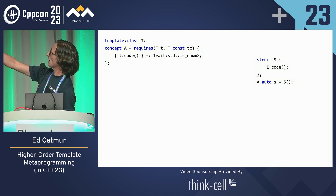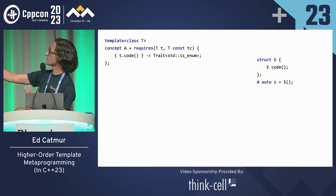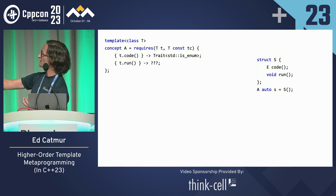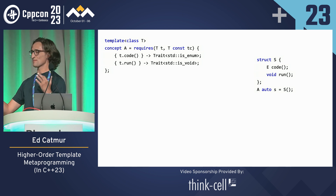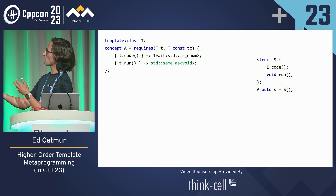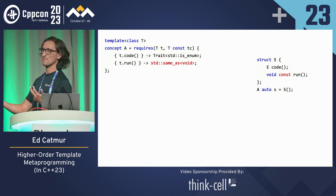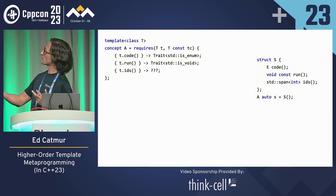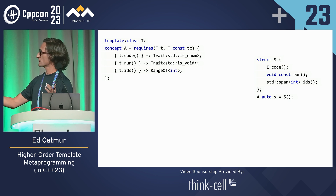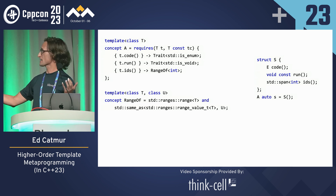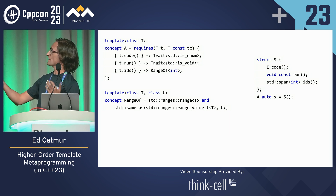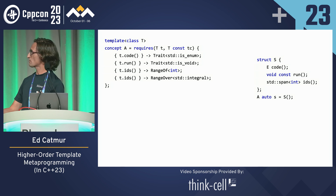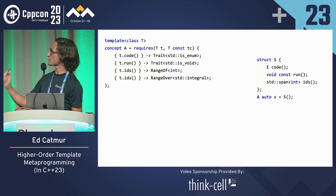What else can we do? Let's say we add a run method and want to constrain it to not return a value — it turns out 'is void' works perfectly. This might seem silly because we could just write same_as<void>, but what if run returned void const? That wouldn't work. Going on — let's say we've got something which returns a span, a span is a range, so we want to say it's a range of int. We can just write this, no problem, no template metaprogramming. But what if we wanted to say it's a range over integral? This is a problem, because you can't pass a concept as a template parameter — except it turns out that in C++23 you can, you just have to quote it the right way.